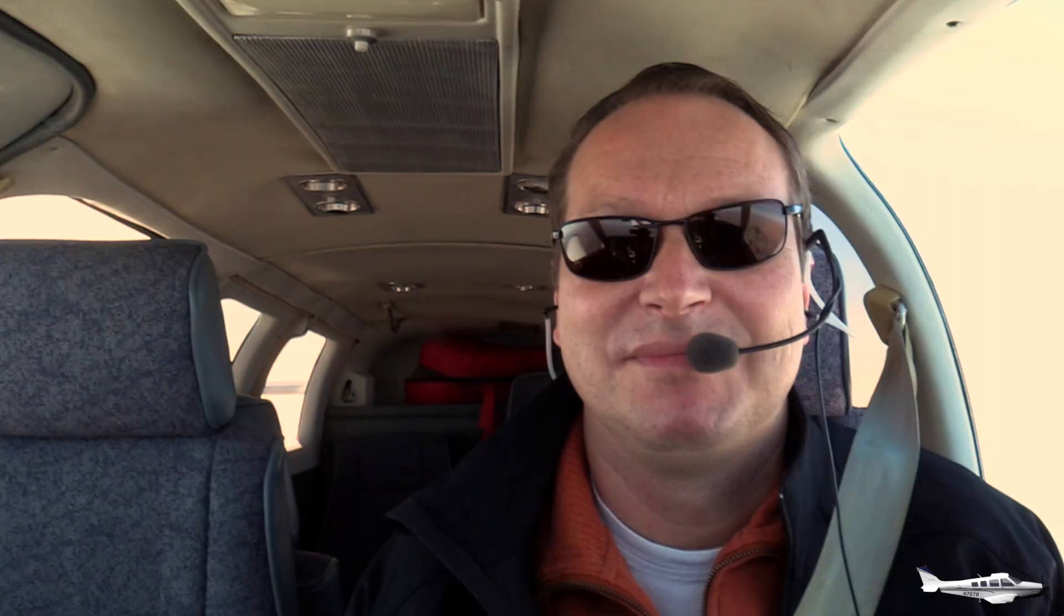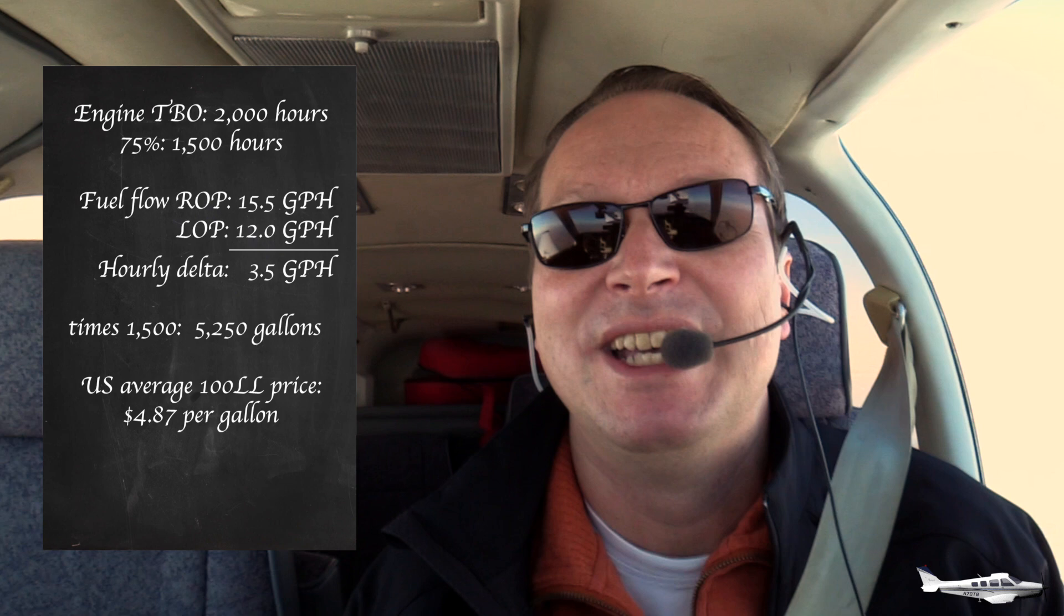At the beginning, I promised you to quantify the fuel savings from flying lean-of-peak. Let's use the expected life of the engine for that, and assume it has a TBO of 2000 hours. Let's be conservative, and assume that we only spent 75% of those 2000 hours going lean-of-peak, leaving the rest for takeoff, climb, or the rich-of-peak operations. Remember, rich-of-peak, we saw 15.5 gallons per hour earlier, as opposed to 12 gallons per hour when lean-of-peak. Times 1500, that adds up to 5250 gallons of saved fuel over the life of the engine. And with an average price of $4.87 in the US per gallon of avgas, according to airnav.com, that means you saved fuel in the amount of $25,567. In other words, when your engine reaches TBO, half of the overhaul is free, thanks to flying lean-of-peak, just from the fuel savings.